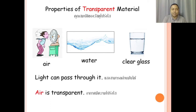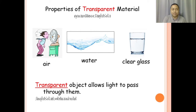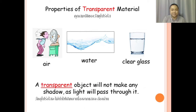Air is transparent. Transparent objects allow light to pass through them. Objects like air, water, and clear glass are called transparent objects. A transparent object will not make any shadow, as light will pass through it.